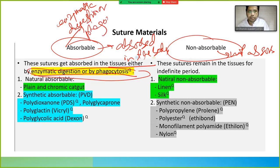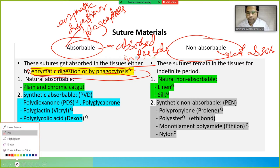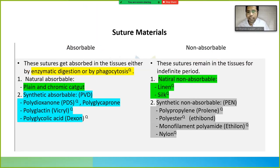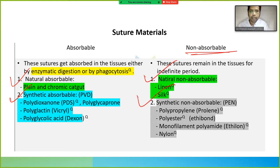In absorbable sutures we have natural and synthetic types. In non-absorbable we also have natural and synthetic. Natural absorbable sutures are plain catgut and chromic catgut.